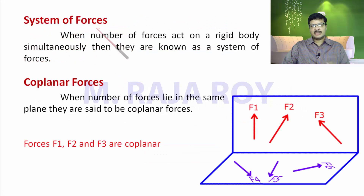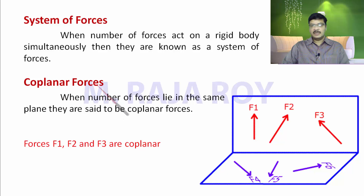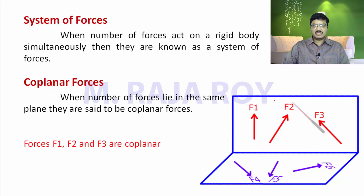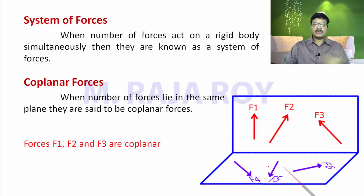Now, what are the different types of system of forces? Force systems are defined as co-planar forces, concurrent forces, parallel forces, and others. Co-planar forces: when a number of forces lie in the same plane, they are called co-planar forces. For example, F1, F2, F3 are in the vertical plane — they are co-planar. F4, F5, F6 are on the horizontal plane — they are co-planar. But F1 and F5 are not co-planar.